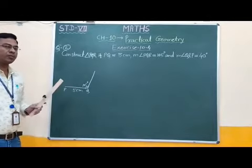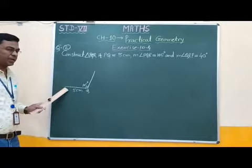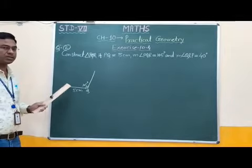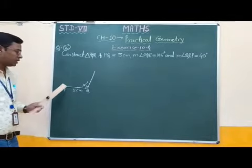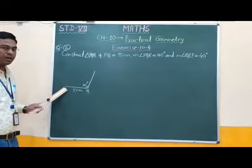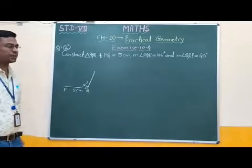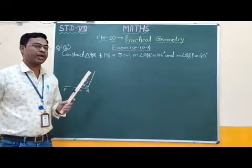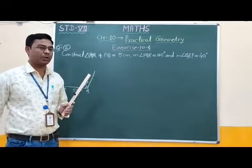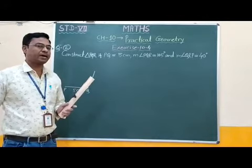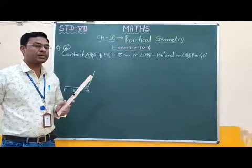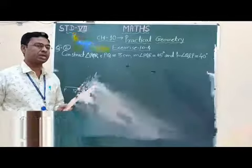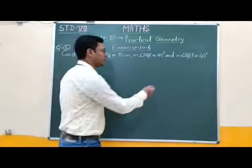Therefore, without finding angle P, we cannot construct this triangle. Therefore, first of all we have to find out the measure of angle P. We can use the angle sum property here. By using the angle sum property, the sum of measures of three angles is equal to 180 degrees.